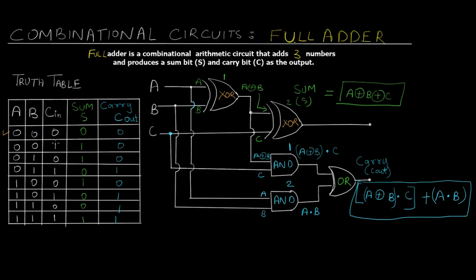Now let's take the second case with one input high: 0,0,1. The XOR operation gives 0 XOR 0 XOR 1 equals 1, because according to the XOR operation the output is always high for an odd number of high inputs. So sum is 1. For the carry: 0 XOR 0 is 0, and 0·1 is 0. The AND operation between A and B gives 0·0 which is 0. The OR operation between 0 and 0 gives carry of 0.